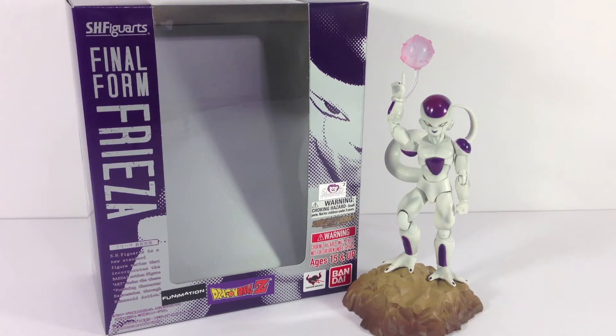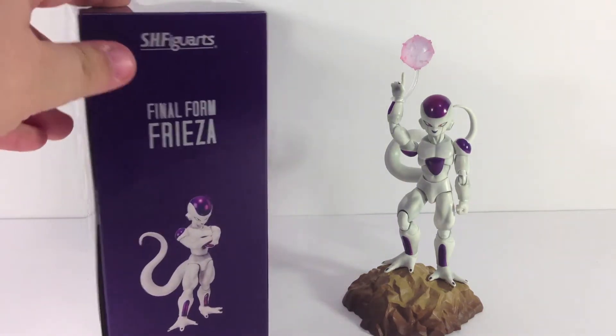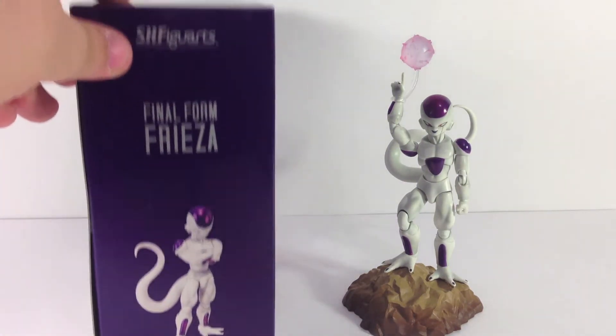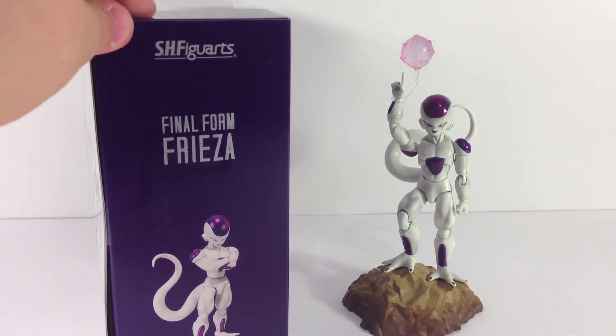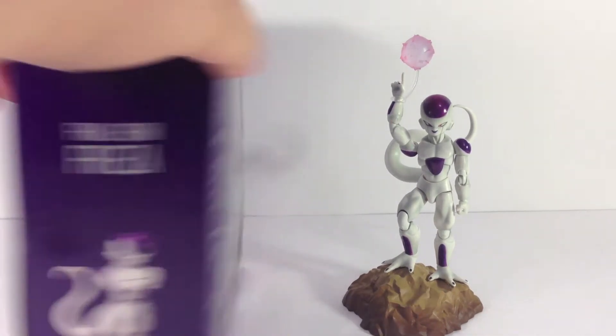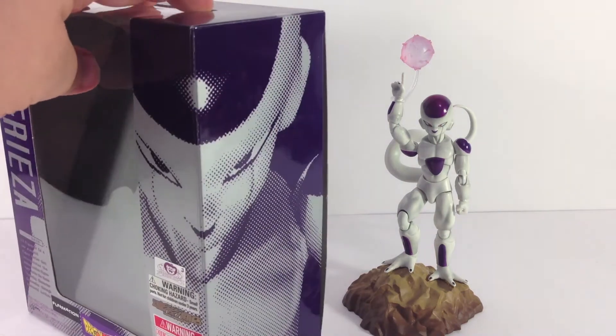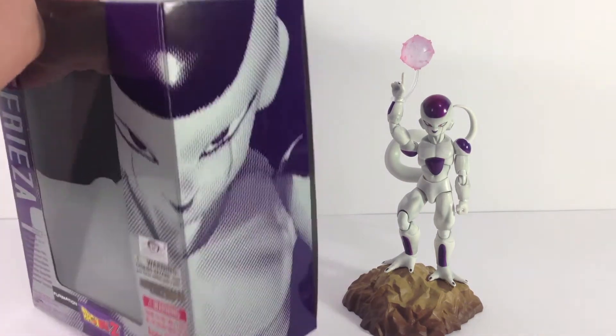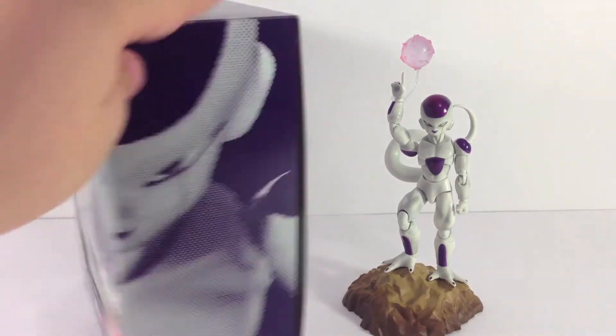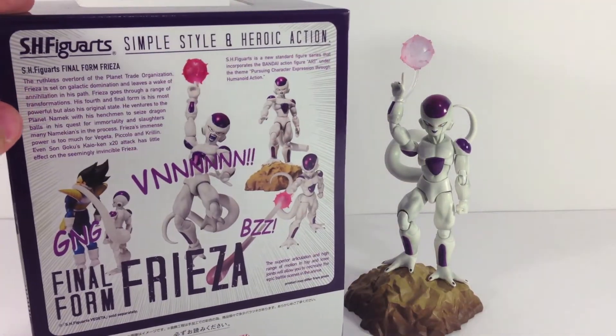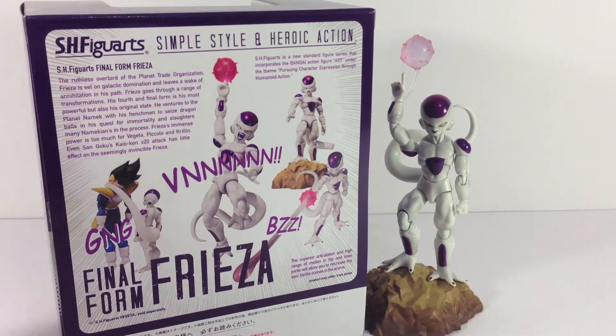So taking a look at the box, it's pretty much your standard Figuarts box, except in English because this is the English release version. As you can see there by Funnovation and Dragon Ball Z at the bottom. On the side of the box, you get Frieza in his classic crossed arms pose, which pretty much every villain has on Dragon Ball Z. On the back, your standard Figuarts jargon with poses, stuff about Frieza, and a few of the accessories that it does come with.